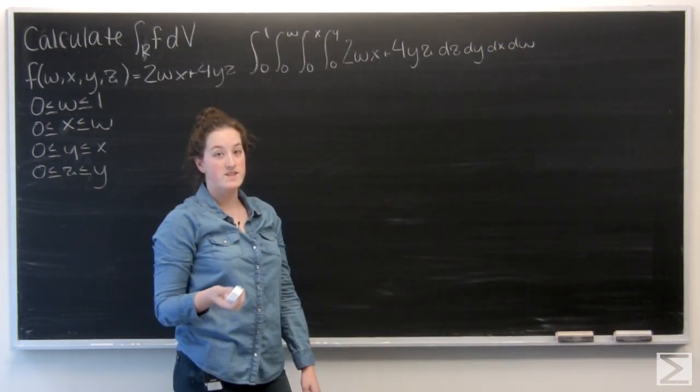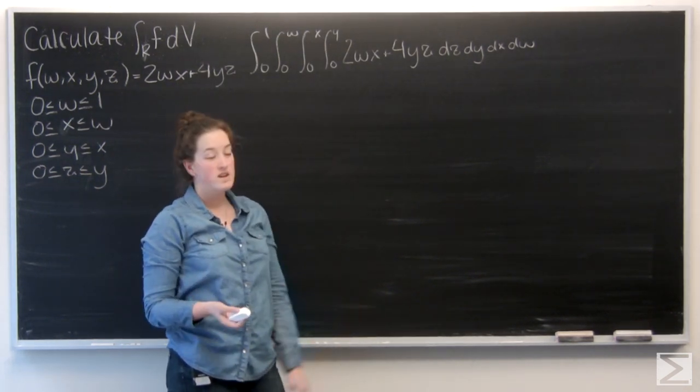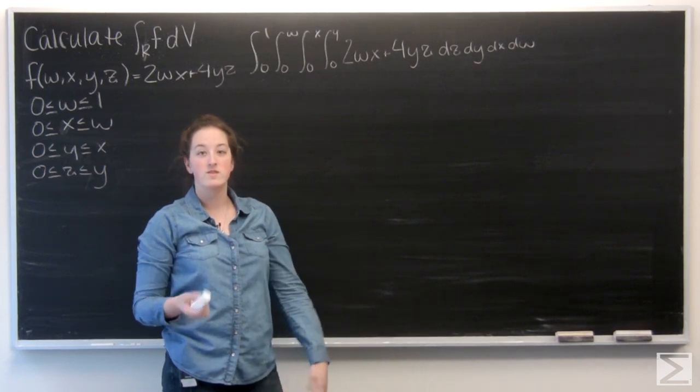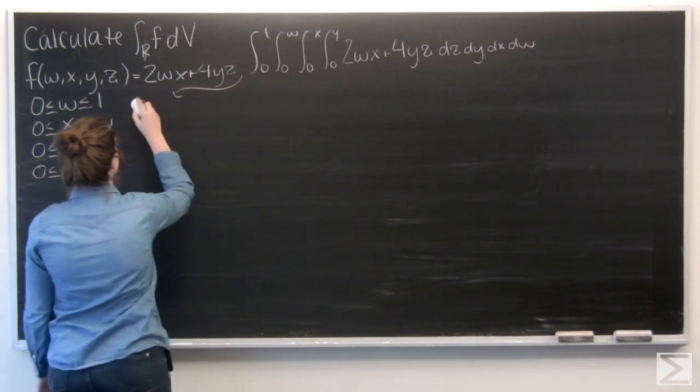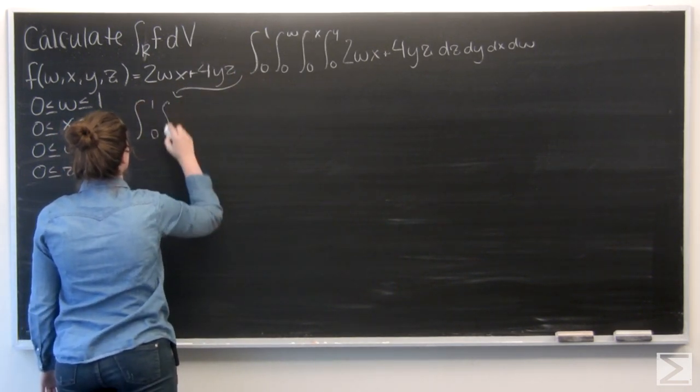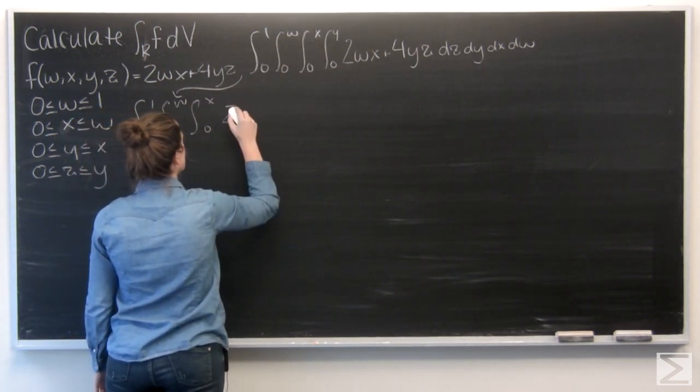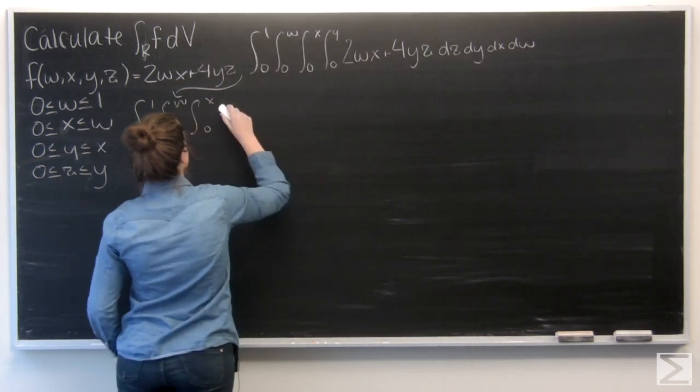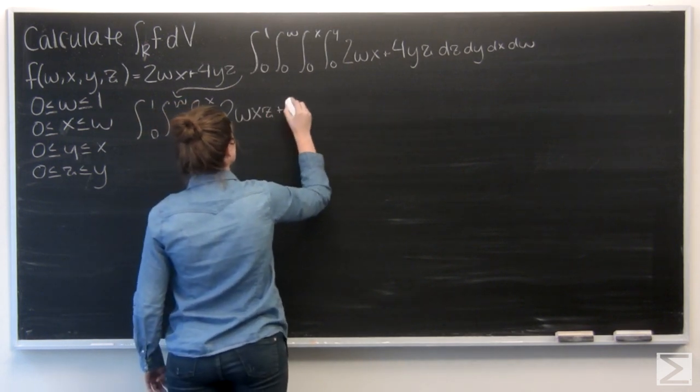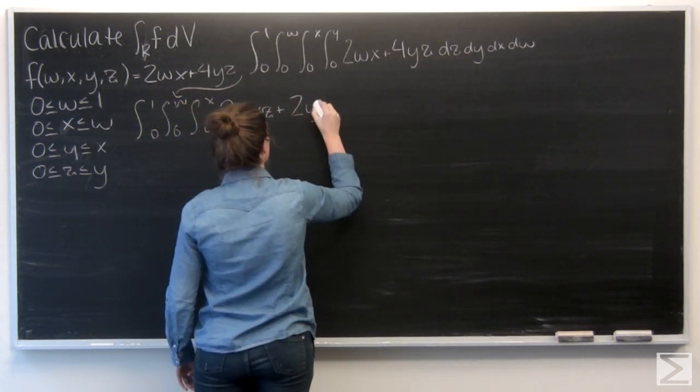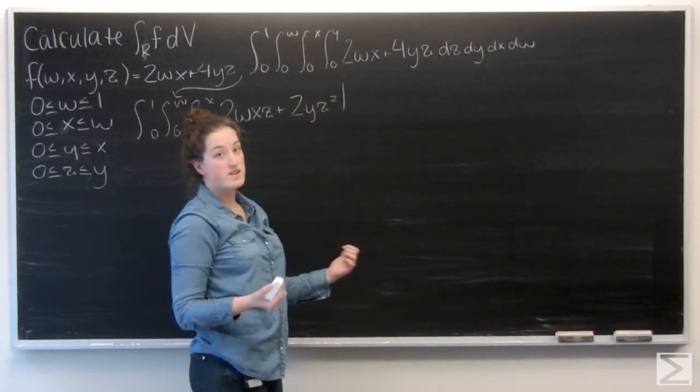First we're integrating with respect to z. So 4wx is just a constant, so that's going to be 4wxz. And 4yz becomes 2yz squared. So we write everything. And then we're evaluating from z equals 0 to z equals y.